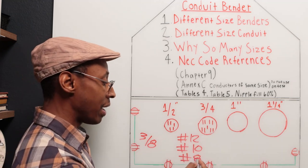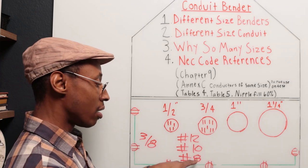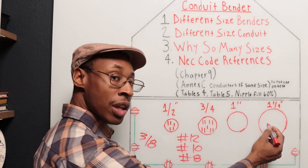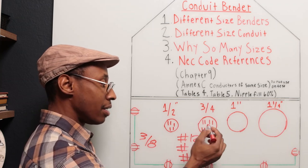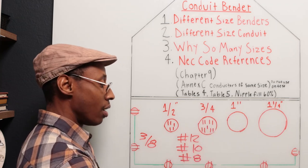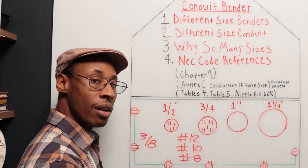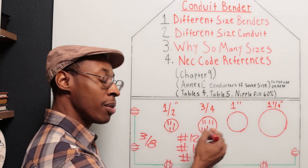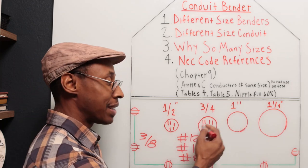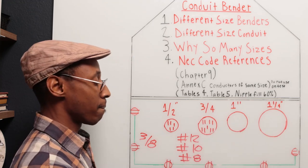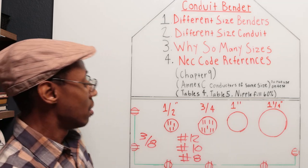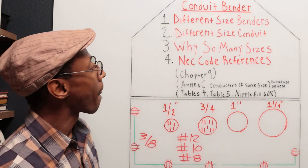So now if you wanted to get, if you had a larger wire, you want to use a larger size conduit. Because if you're trying to put the same amount of number eights in this three quarter, then it won't fit. So you would have to upsize to the next size or maybe even the next size conduit.